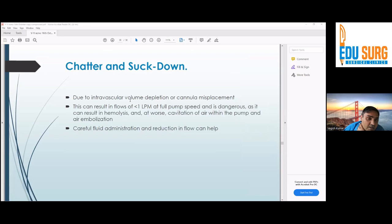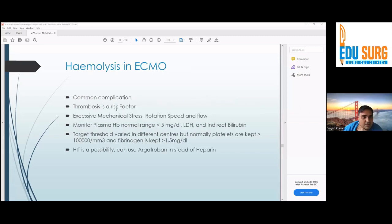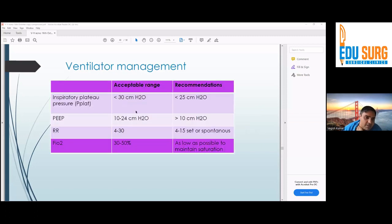If there is chatter or suckdown, if your circuit is swinging and it's trying to suck out, it means your patient is intravascularly depleted or your cannula is misplaced. Giving fluid is a good option. You should give some fluid so that you can maintain the cardiac output and you can keep your inferior vena cava full with blood so that there is no suckdown or chattering. For ventilator management, the whole purpose of doing ECMO is to give rest to lungs. Normally we keep plateau pressure below 20, PEEP around 10, respiratory rate 4 to 15, and FIO2 as low as possible. That's the recommended setting, but we can manipulate settings according to the clinical condition of the patient.